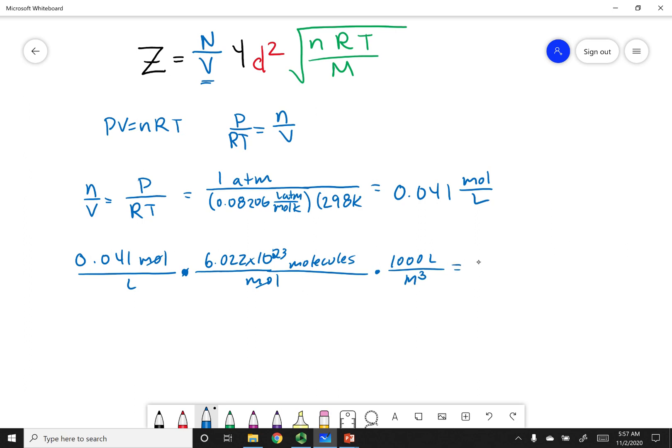If I do this calculation out, I get 2.47 times 10 to the 25th molecules per cubic meter. And this equals capital N over V, the number of molecules per volume.